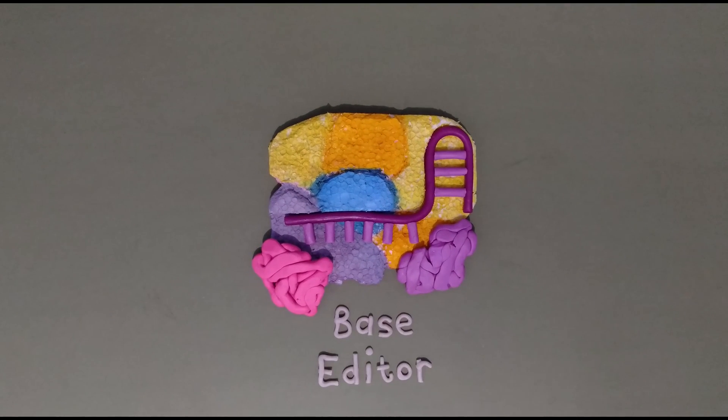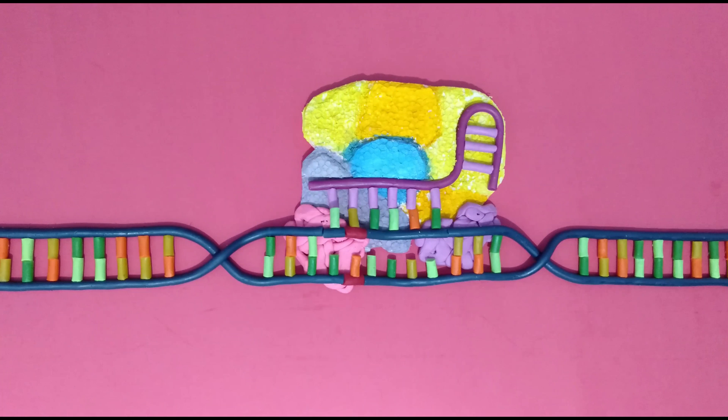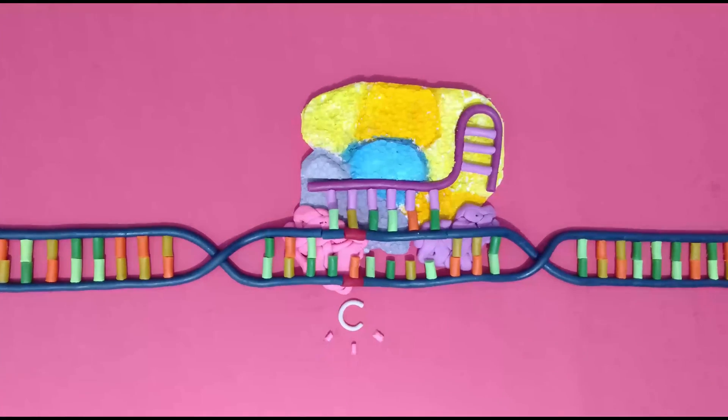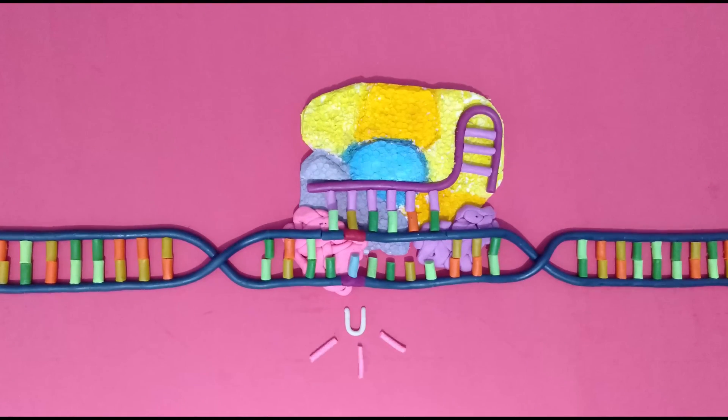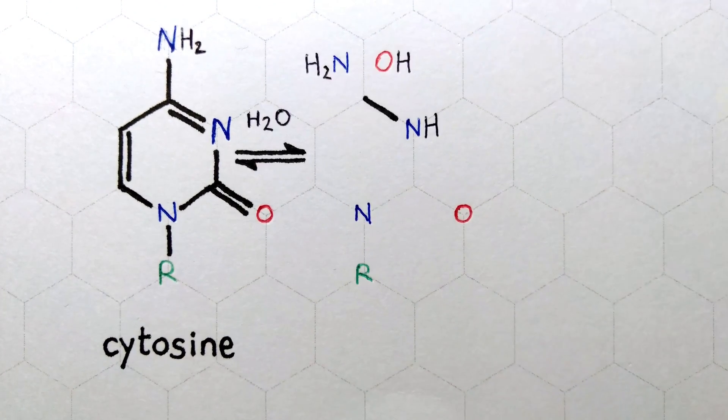The complex will recognize the target site, in this case a GC base pair that should be an AT base pair. The deaminase part of the complex will remove the amino group from cytosine, which results in uracil. Here's a closer look at the reaction.